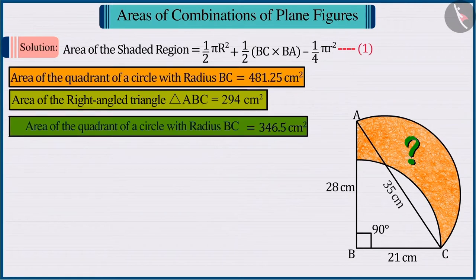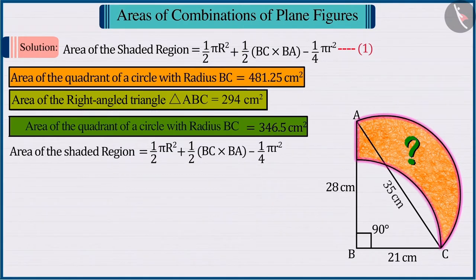Since we have to find the area of the shaded region, substitute the value of these three areas in equation 1 and solve. The area of the shaded region is obtained as 428.75 cm².